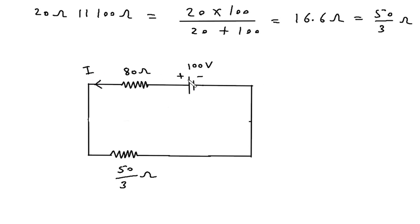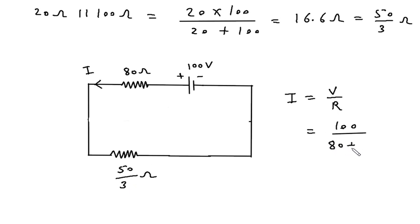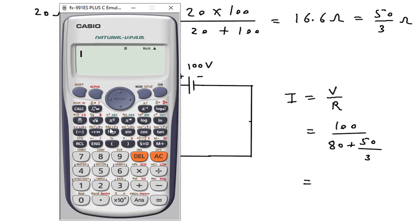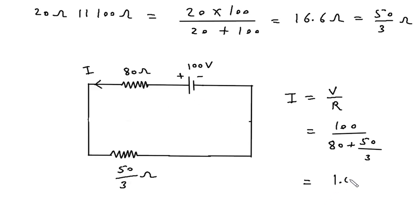From the simplified circuit we can find the value of total current I. I is equal to V by R. The value of voltage is 100 volts divided by resistance, which is 80 plus 50 by 3. So this will be 100 divided by 80 plus 50 by 3, which gives 1.03 ampere.